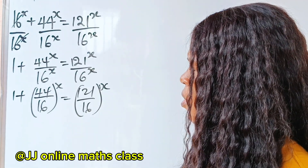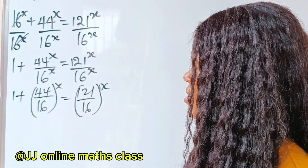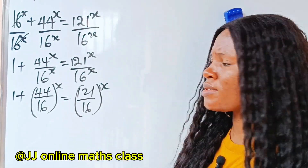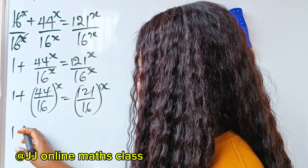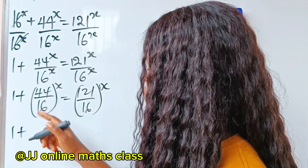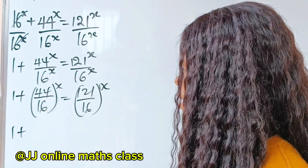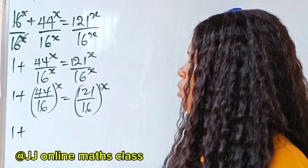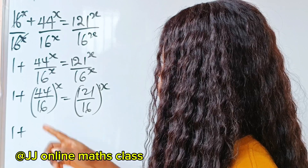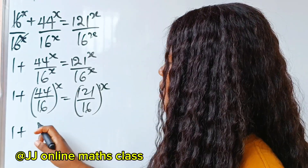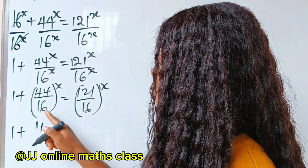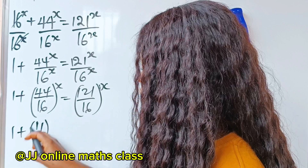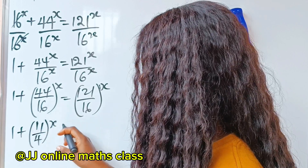Now it's time to look out for common factors, because that is the only way I can bring out something here. So I have 1 plus 44 and 16 — they have 4 in common. The common factor is 4, so when 44 is divided by 4 I will have 11, and when 16 is divided by 4 I will have 4, raised to the power of x.